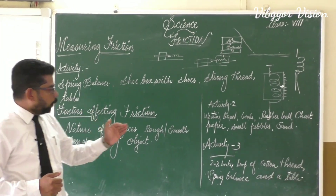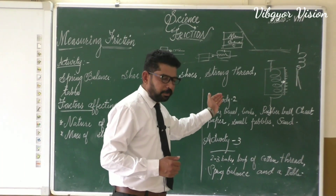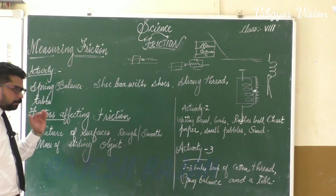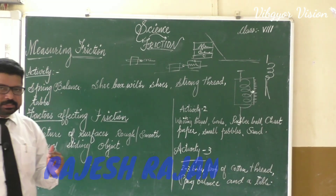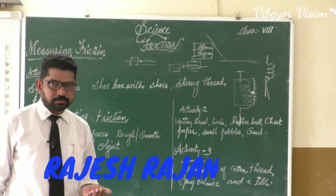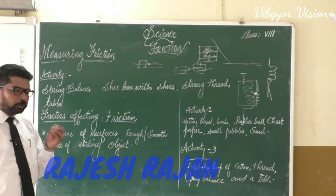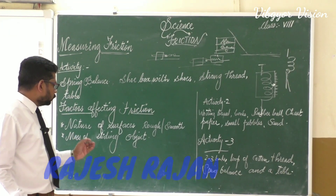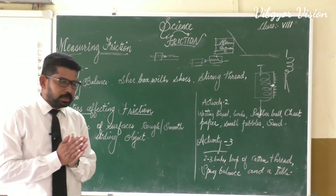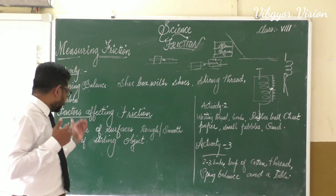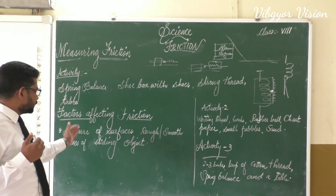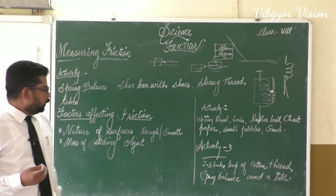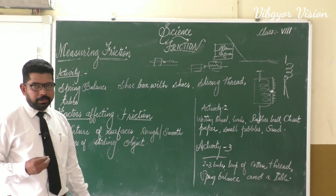So from these two activities — Activity 2 and Activity 3 — we can conclude: after roughness increases, friction increases, and after smoothness increases, friction decreases. And in the second case, mass of a sliding object is directly proportional to friction. That means as mass increases, friction also increases.